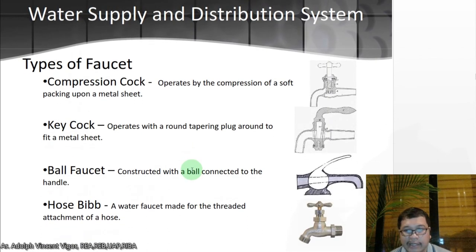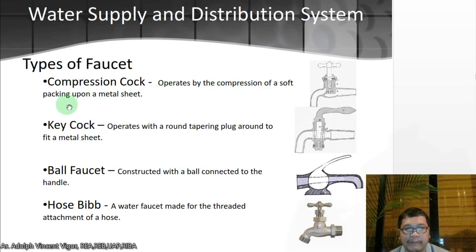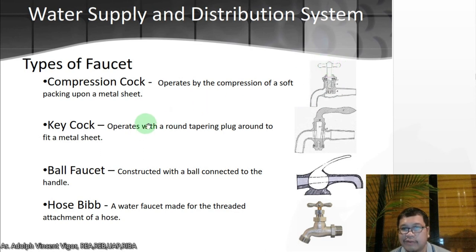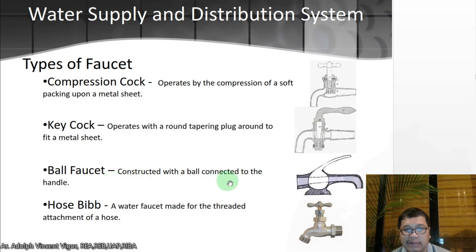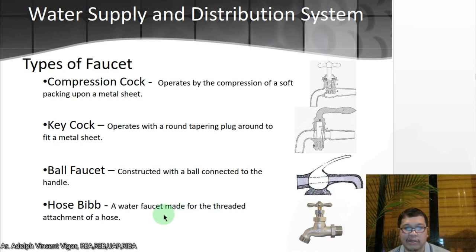For our last topic this week, let's talk about the types of faucets. You have the compression pack faucet, which operates by compression of a soft packing upon a metal seat. Then there is the plug-type faucet, which operates with a round tapering plug fitted to a metal seat. Then there is the ball faucet, constructed with a ball connected to the handle — you rotate it to allow water in or out. Finally, the hose bib, which is a water faucet made for the attachment of a hose.